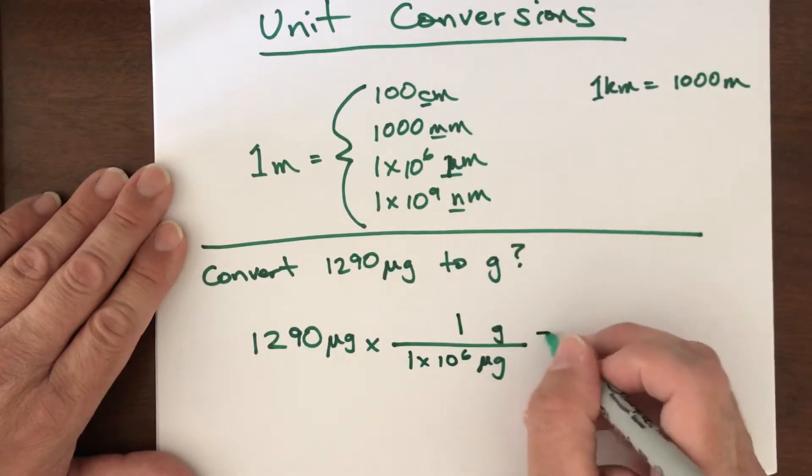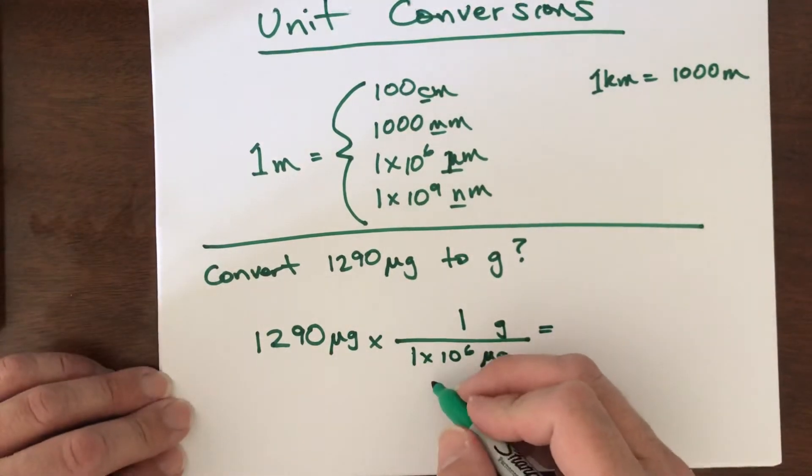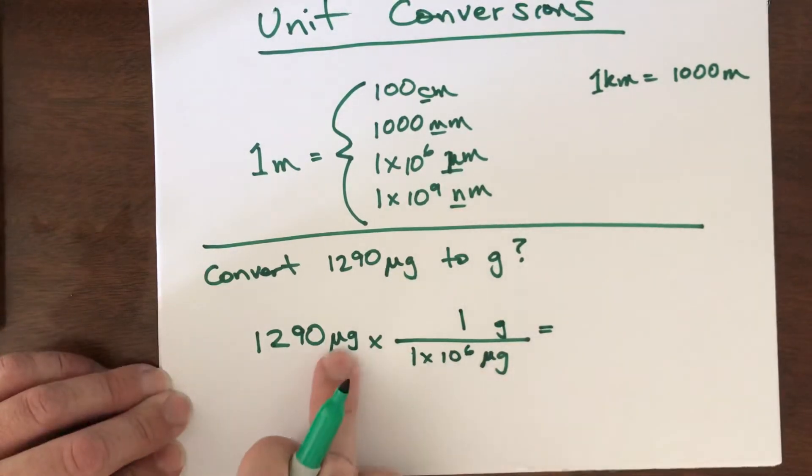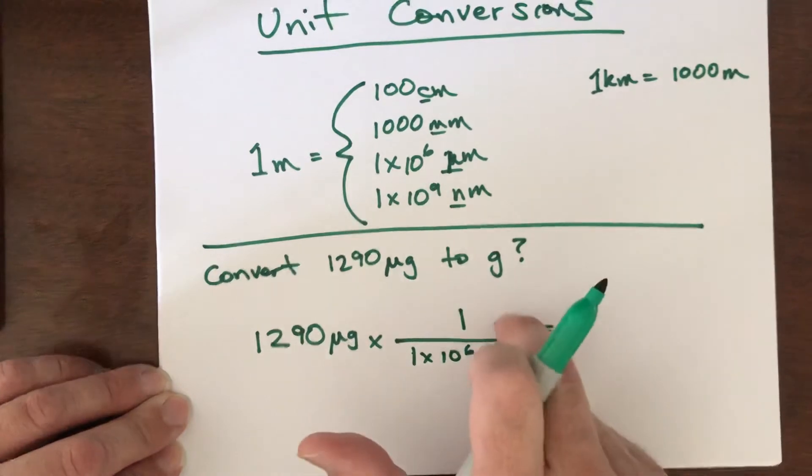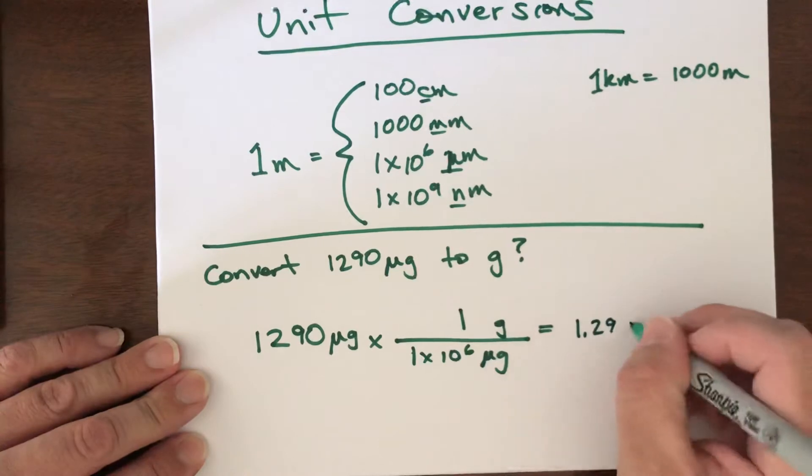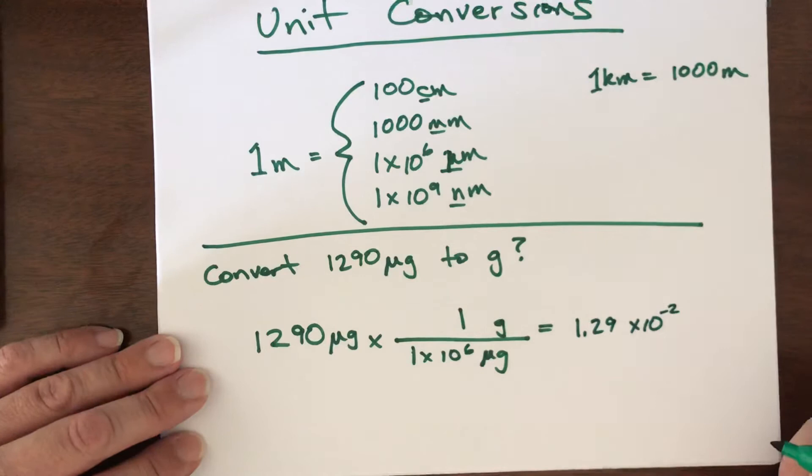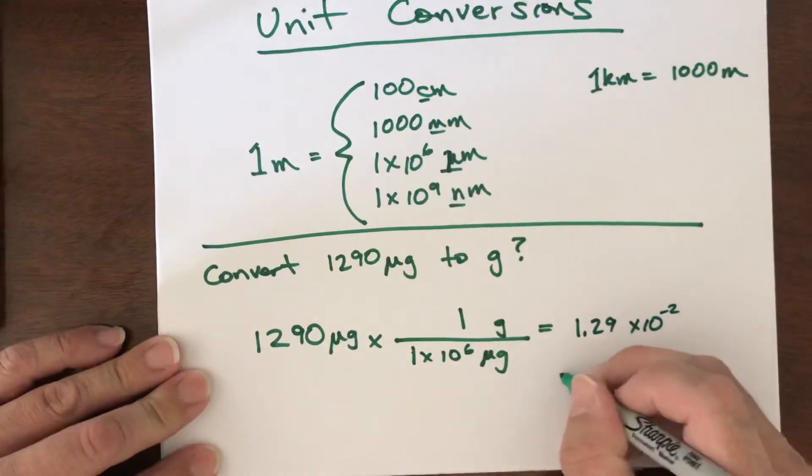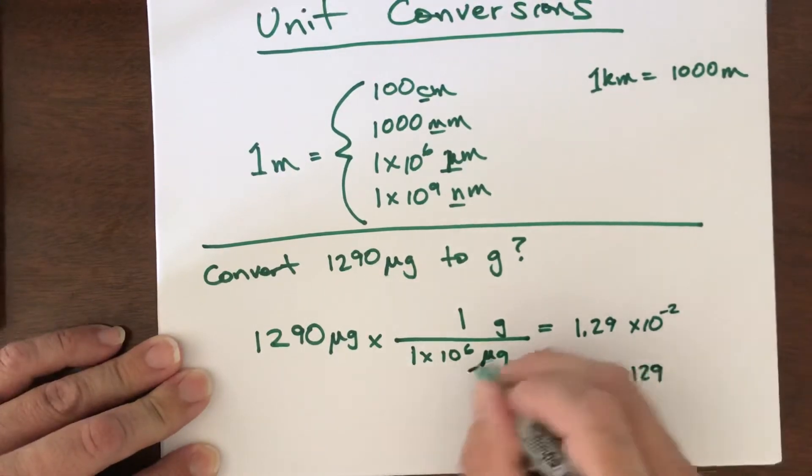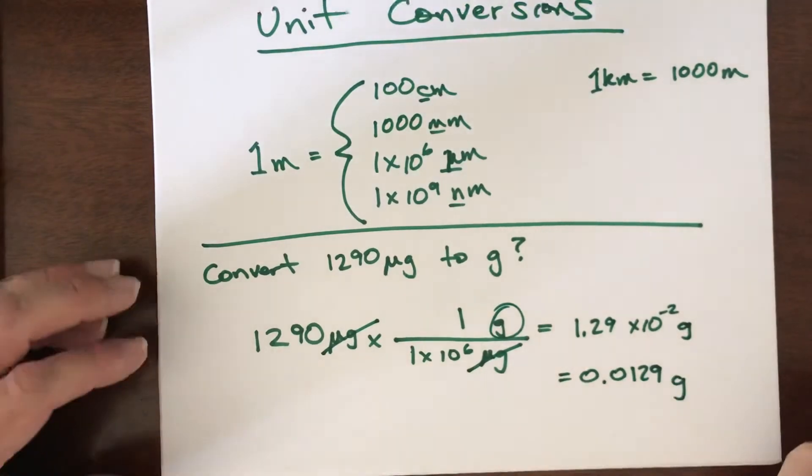All right and now we're done. That's all we have to do is utilize the prefixes to get the numbers right, and then as always with conversions, whatever the unit is here matches the unit in the denominator. The unit we're going to goes in the numerator. So this is going to come out to be 1.29×10⁻² or you could write it as 0.0129, either of those. Notice that the micrograms cancel, the new unit is grams.